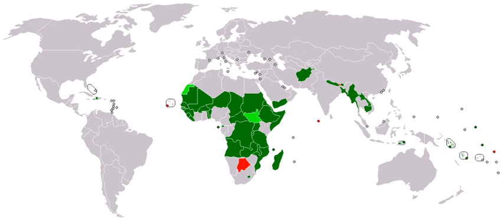Most developing countries have these criteria in common: high levels of poverty, measured based on GNI per capita averaged over three years — for example, if the GNI per capita is less than US $1,025 as of 2018, the country is regarded as a least developed country. Human resource weakness based on indicators of nutrition, health, education and adult literacy. Economic vulnerability based on instability of agricultural production, instability of exports of goods and services, economic importance of nontraditional activities, merchandise export concentration, handicap of economic smallness, and the percentage of population displaced by natural disasters.